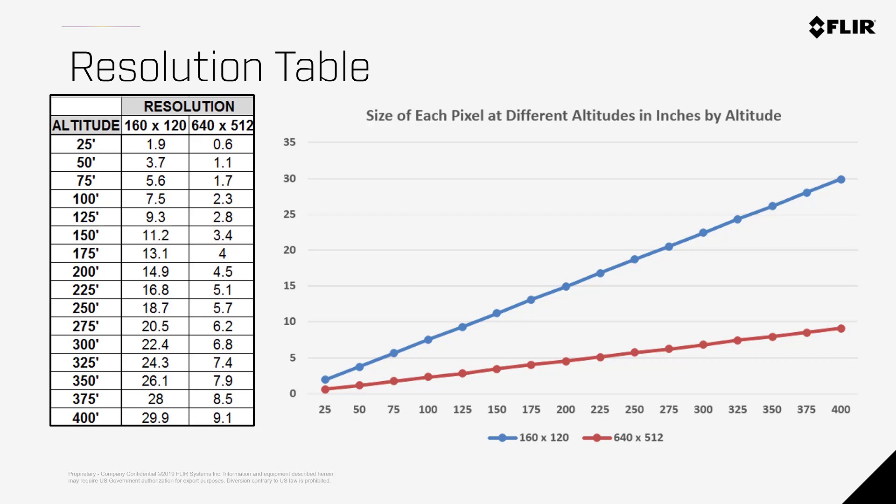For solar inspections, when a typical cell is 6x6 inches, you would need to fly at around 25 feet from the solar cell with a 160x120 camera to merely detect the anomaly, whereas you could be at 75 feet with a 640x512 camera and even estimate good temperature measurement at 50 feet. This chart also shows that unless your subject is massive, the usefulness of low resolution thermal sensors is gone once you're above 75 feet, but the 640x512 is still really useful well above 200 feet.